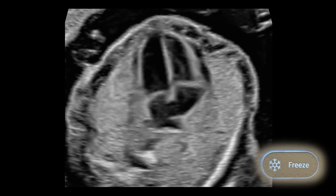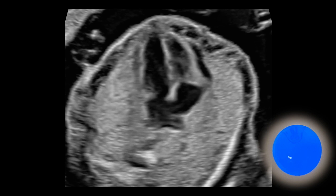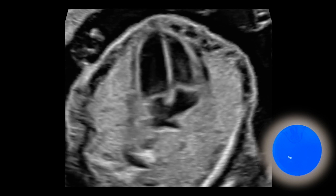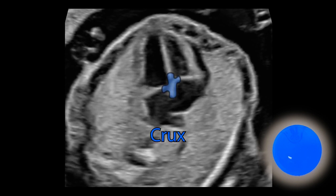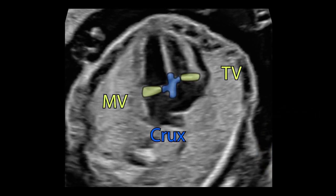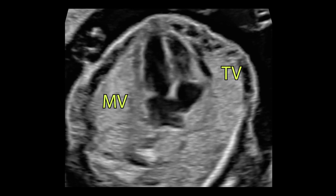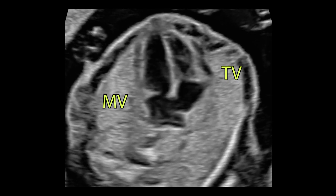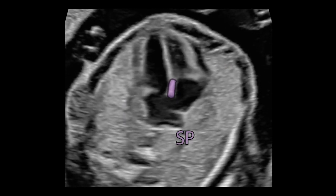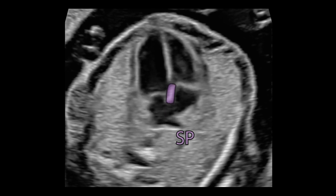The cine-loop function is an excellent tool to evaluate the crux of the heart. The tricuspid valve is slightly more apical than the mitral valve, and both AV valves are implanted separately. They open and move freely. The small interatrial septum, septum primum, is visible.